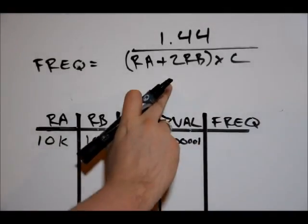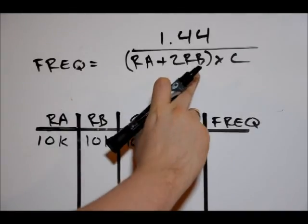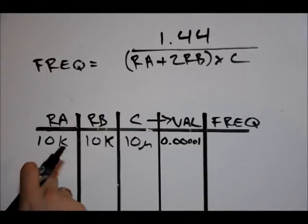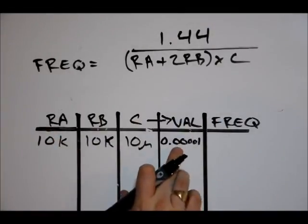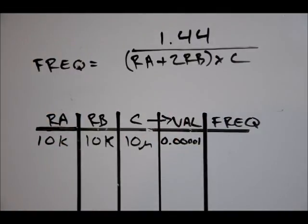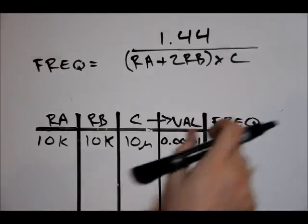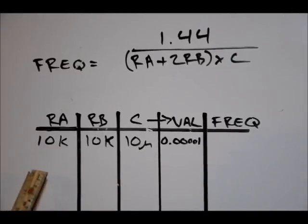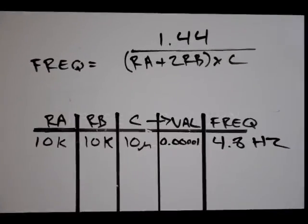So we would multiply. So to do this calculation, we would first do 2 times RB, which would be 2 times 10K is 20K. So 20,000 plus 10,000. Multiply that total by 0.00001. Record that value. And then take 1.44 divided by that total value. That will give us our output frequency. And our output frequency is basically a value that will determine how often the output is pulsed. So we'll actually see that in a few minutes when we do a lab. But pause it now. Try to do this calculation. See if you match what I get for your output frequency.